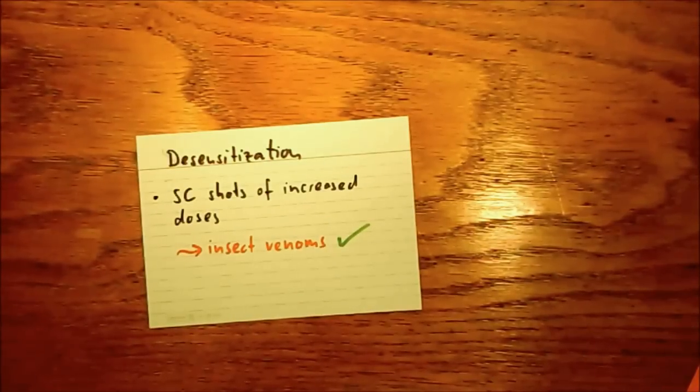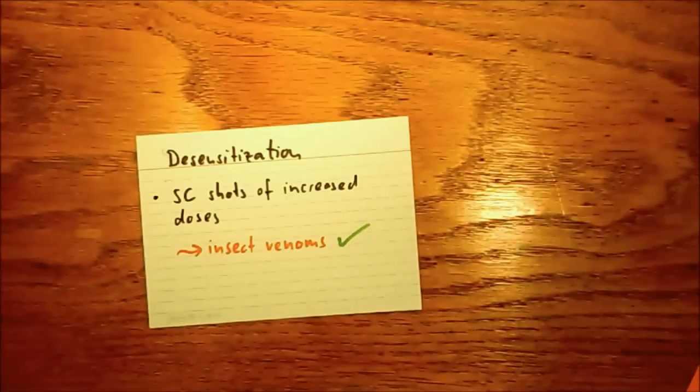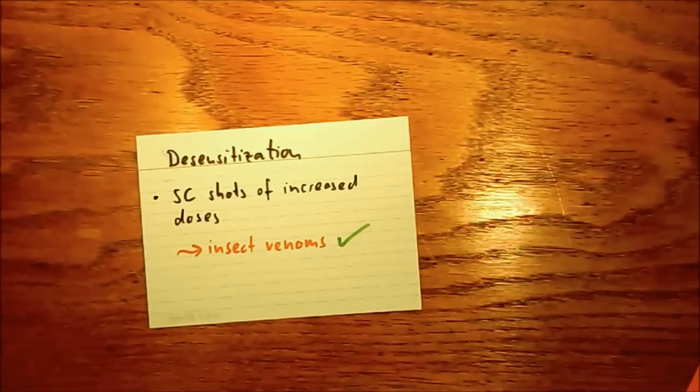There are some treatments that work fairly well, for example for insect venoms. They consist of several consecutive shots that are evenly spaced, and the dose gets stronger and stronger. This kind of gets the immune system used to the trigger again. Desensitization with increasing doses can also work for a lot of antibiotics.